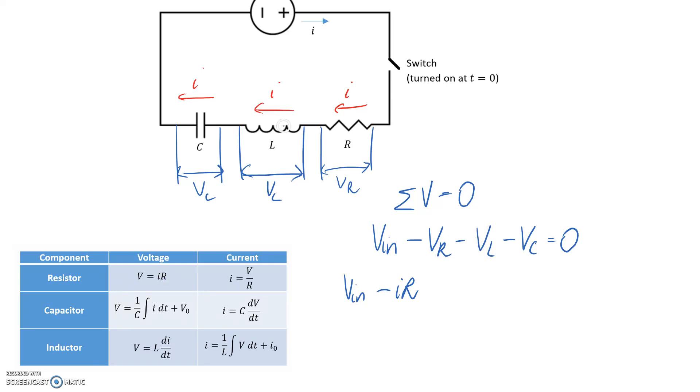If we look at our next component, it's an inductor. Again, we know the current running through it is I. So if we look at our table, it's going to be this equation. L is the inductance, and it's just proportional to the rate of change of current over time. So minus L di/dt. The last one, it's voltage across a capacitor.